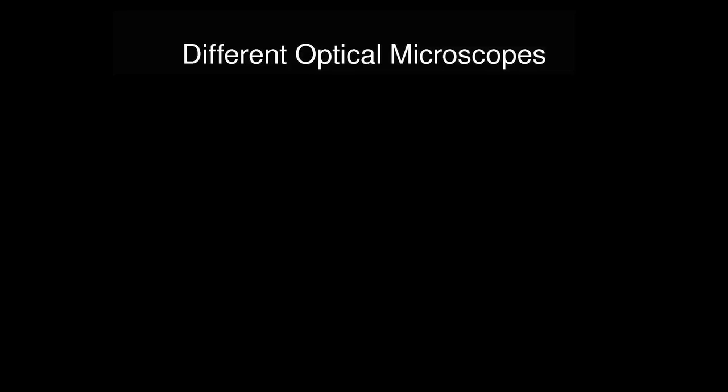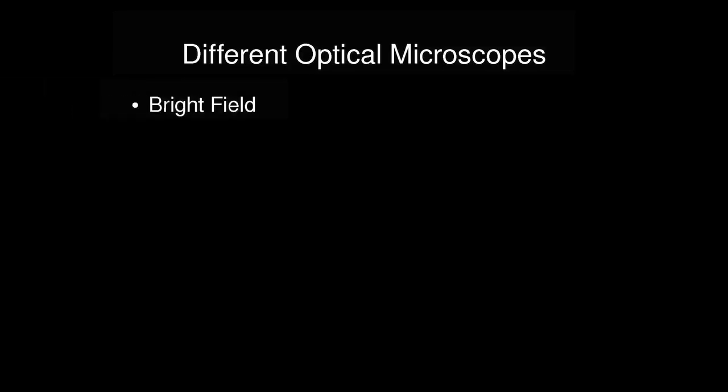So there's different ways to do microscopy. I already told you a little bit, there's bright field, that's kind of this image. So we shine light through the sample to our eye or to our tip in our case, that gives images like this. And we have a lot of light and so we kind of create the shadow of what we want to look at.